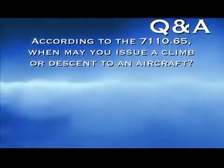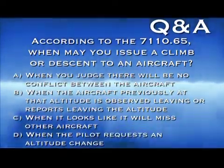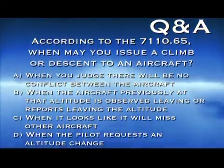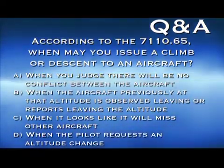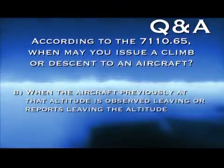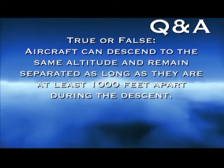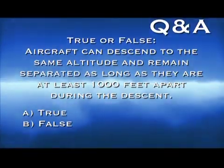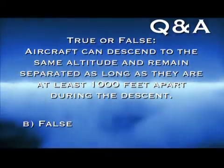According to the 7110.65, when may you issue a climb or descent to an aircraft? A. When you judge there will be no conflict between the aircraft. B. When the aircraft previously at that altitude is observed leaving or reports leaving the altitude. C. When it looks like it will miss other aircraft. D. When the pilot requests an altitude change. The correct answer is B. True or false: aircraft can descend to the same altitude and remain separated as long as they are at least 1,000 feet apart during the descent. The answer is false — vertical separation does not exist during a descent. It only applies to the final altitudes of the two aircraft.